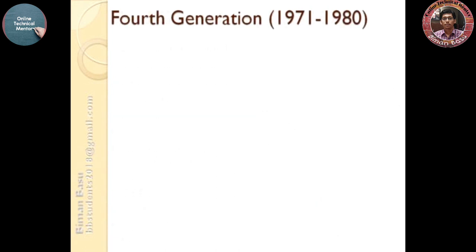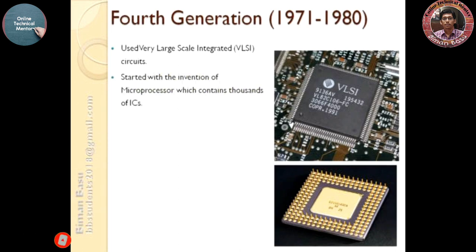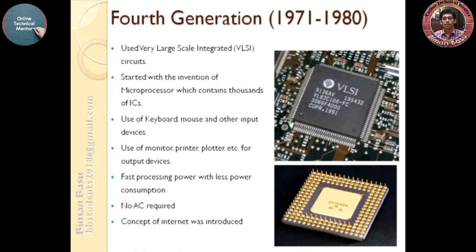Fourth generation: 1971 to 1980. In this generation, very large scale integrated circuits were used. Started with the invention of the microprocessor, which contains thousands of ICs incorporated in a single chip. Used keyboard, mouse, and other input devices, as well as monitors, printers, plotters, etc. for output. Faster processing power with less power consumption. No AC required. The concept of the internet was introduced. Apple Macintosh and IBM PC are some examples of fourth generation computers.